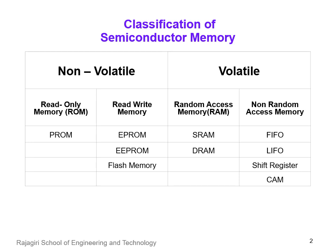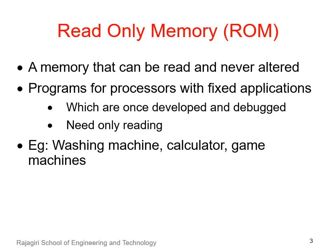Now, we will be discussing about read-only memory, ROM. Basically, ROM is a memory into which bit values are stored only once, that is during manufacture, and thereafter the contents are not altered — they are only read. Consider applications like washing machine, calculator, or some game machine for which the application programs are fixed. These programs are developed and debugged and written in the ROM. When the applications are running, these programs only need reading.